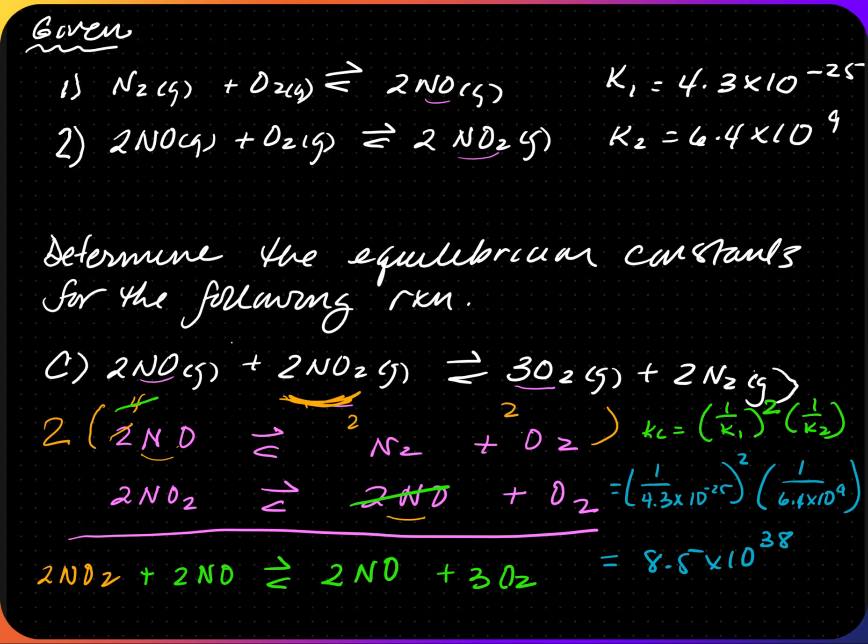When manipulating equilibrium expressions, write the overall equation by adding individual equations using Hess's law. If an equation is reversed, take the reciprocal of its K. If an equation is multiplied by a factor, that factor becomes the exponent of K. Using Hess's law, the K constants of all individual reactions are multiplied together to get the overall K.